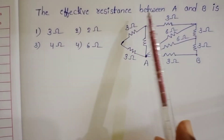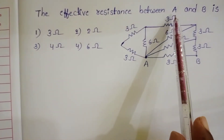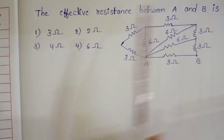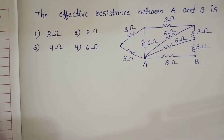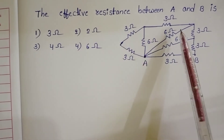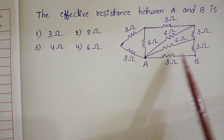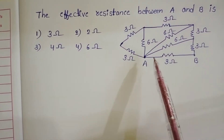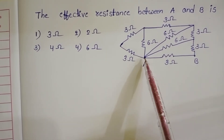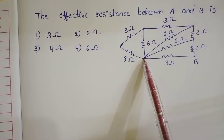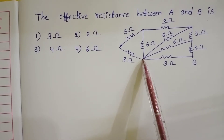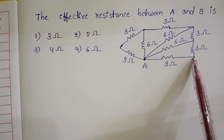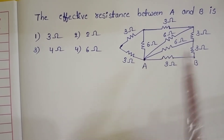The effective resistance between A and B. Once observe the given circuit diagram, we want to find out the effective resistance in between A and B.